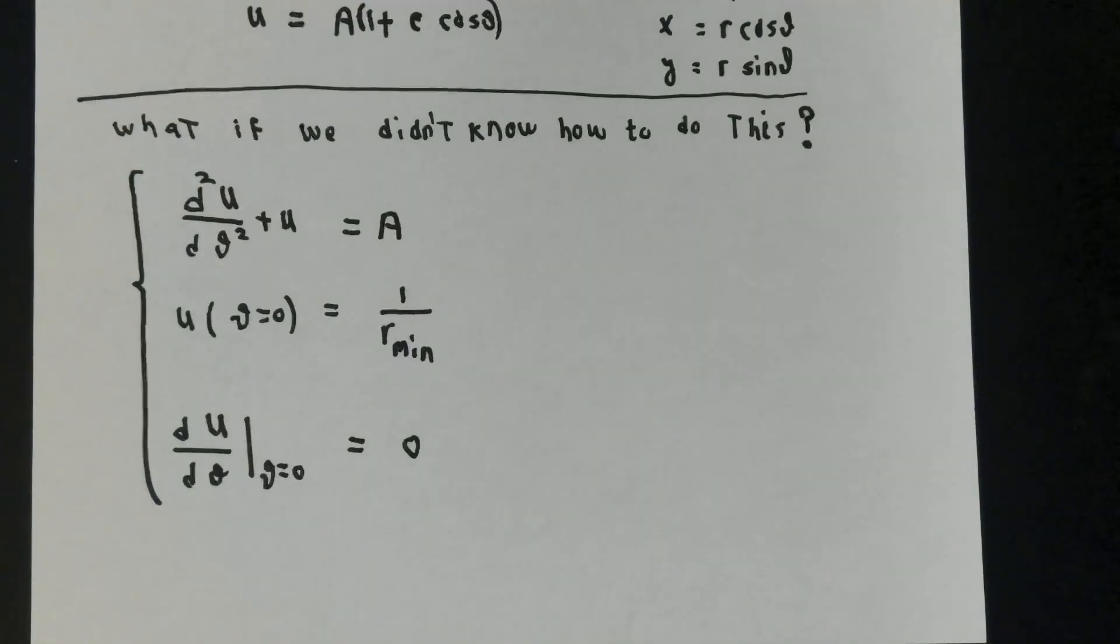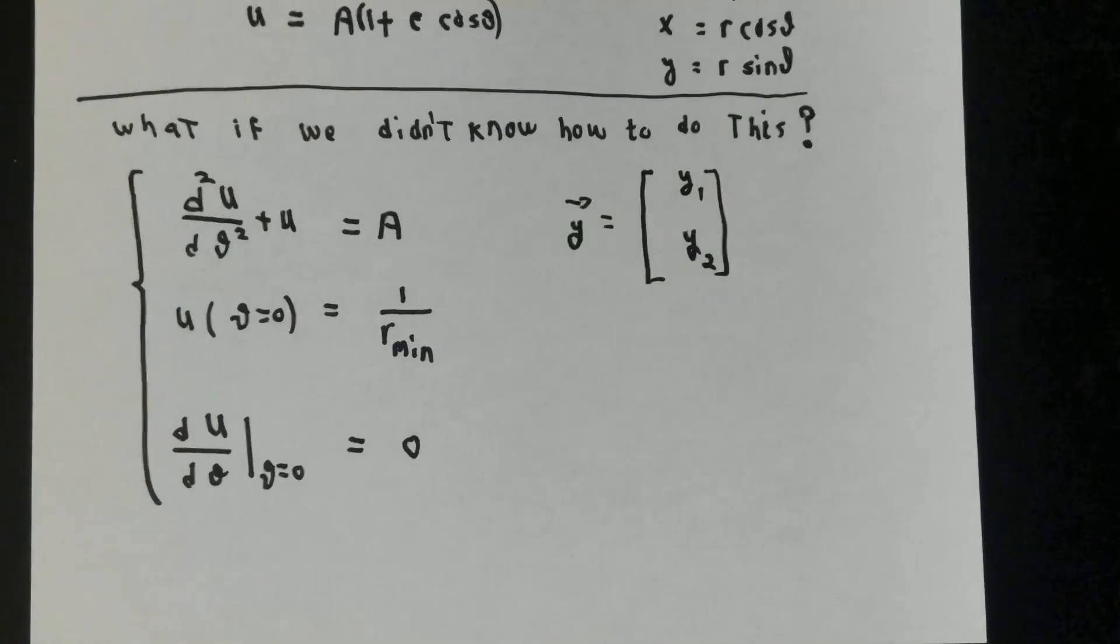If we didn't know how to solve that differential equation though, we would be faced with this issue. Second derivative of u with respect to theta plus u is some constant, or more generally, some formula that might have theta and u in it, or even du d theta. We do know that u, when theta equals zero, is supposed to be 1 over the minimal r value. And because of the way that we've turned our coordinate axis, the derivative of u must be zero when theta is equal to zero.